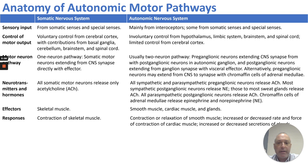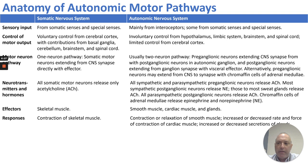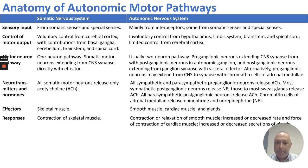The somatic response is conscious control resulting in contraction of skeletal muscles. For the autonomic nervous system, sensory input is mainly interoceptors — receptors in organs and glands that give feedback — and some from somatic or special senses. Control of motor output is involuntary, coming from the hypothalamus, limbic system, brainstem, spinal cord, and a limited amount from the cerebral cortex. The neuronal pathway is a two-neuron system: a preganglionic neuron extending from the CNS to the ganglion where the postganglionic neuron is activated to innervate the visceral effector. Alternatively, preganglionic neurons may extend from the CNS to synapse with chromaffin cells at the adrenal medulla to activate this endocrine pathway.